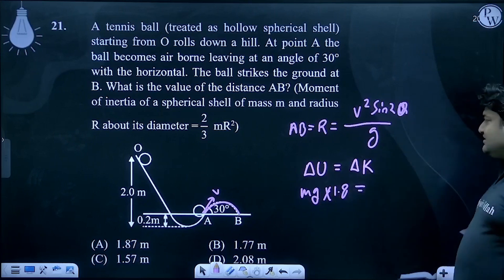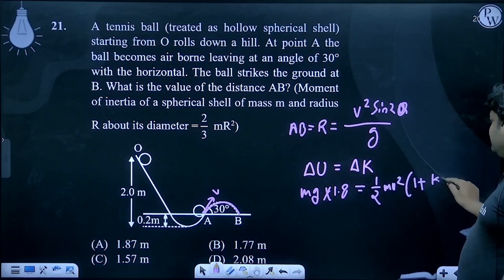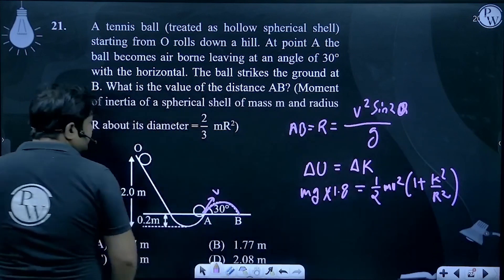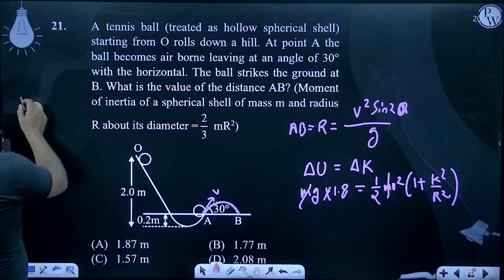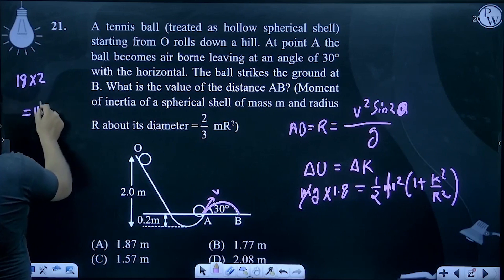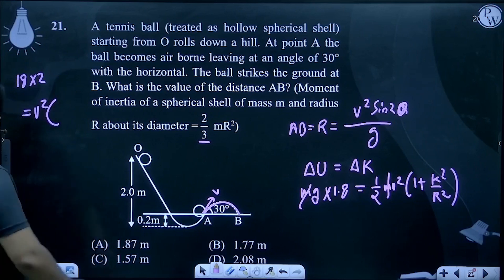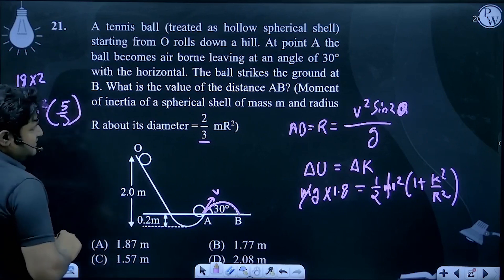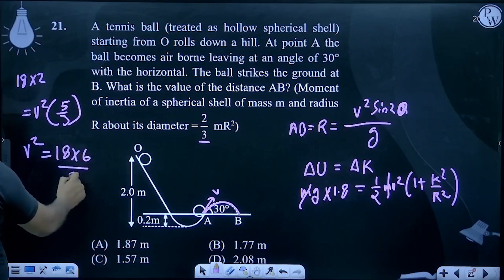Initial potential energy mgh equals final kinetic energy: ½mv²(1 + k²/r²). For rotational and translational motion, k²/r² = 2/3, so 1 + 2/3 = 5/3. Here, gh = 10 × 1.8 = 18, so v² = 18 × 6/5.